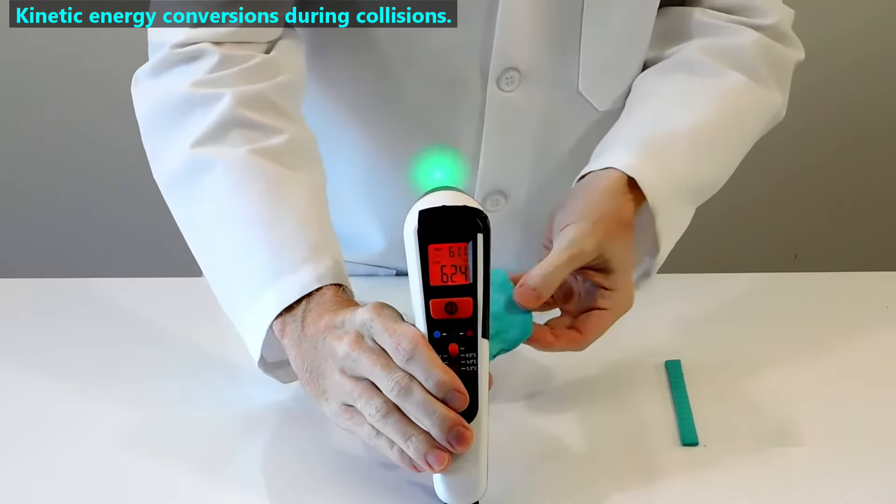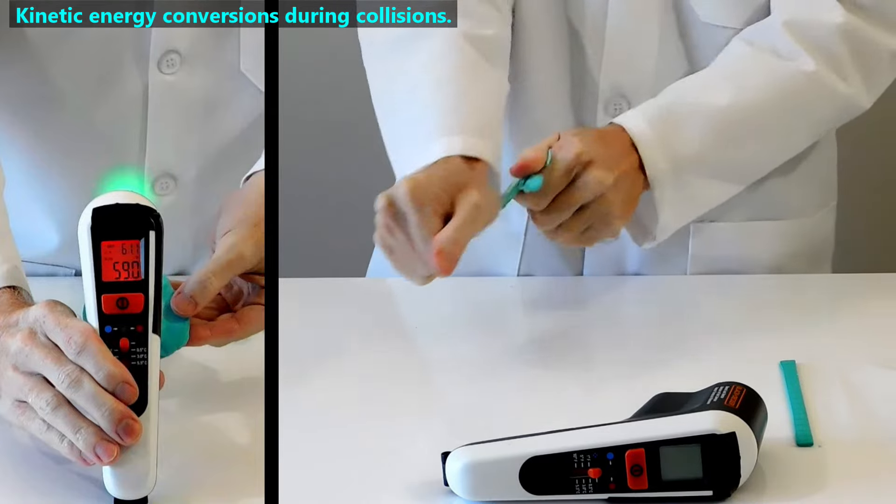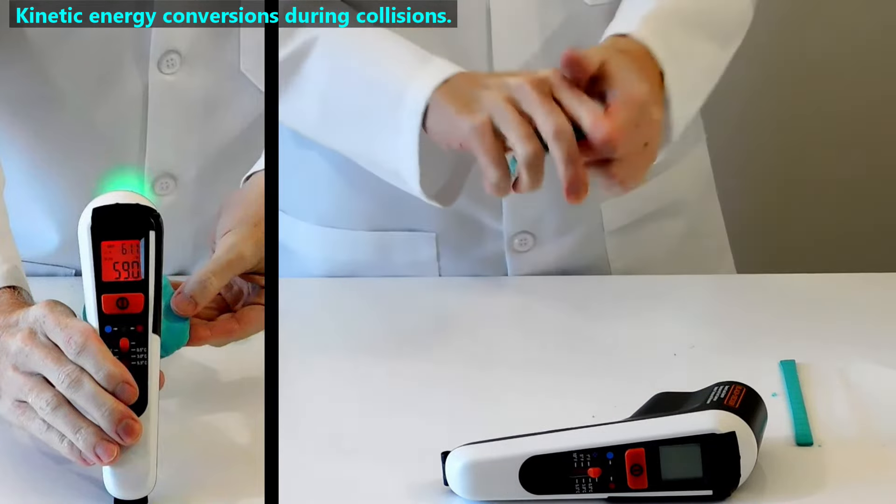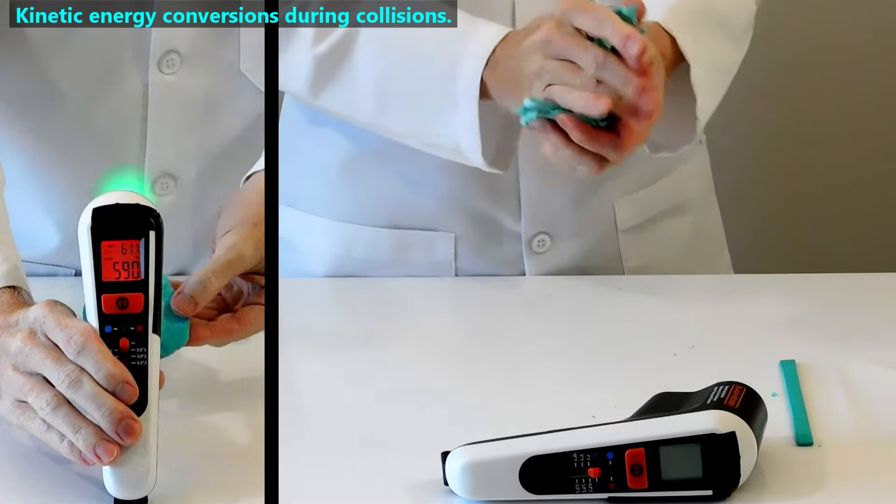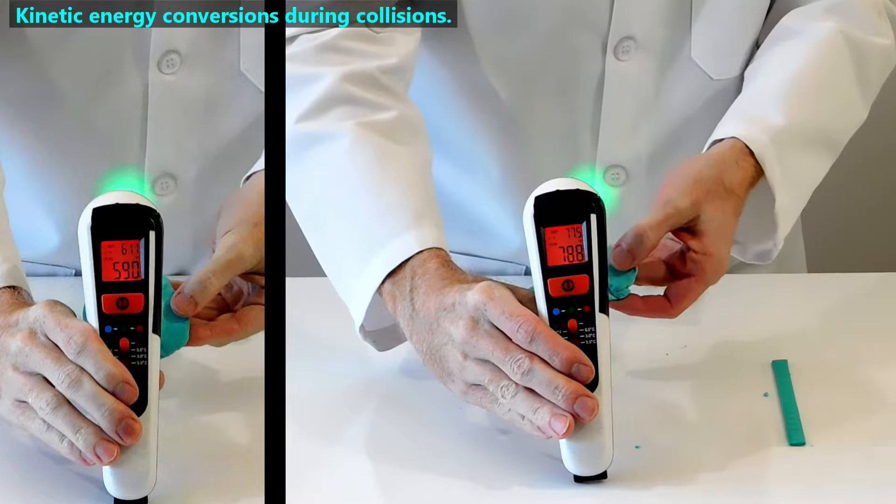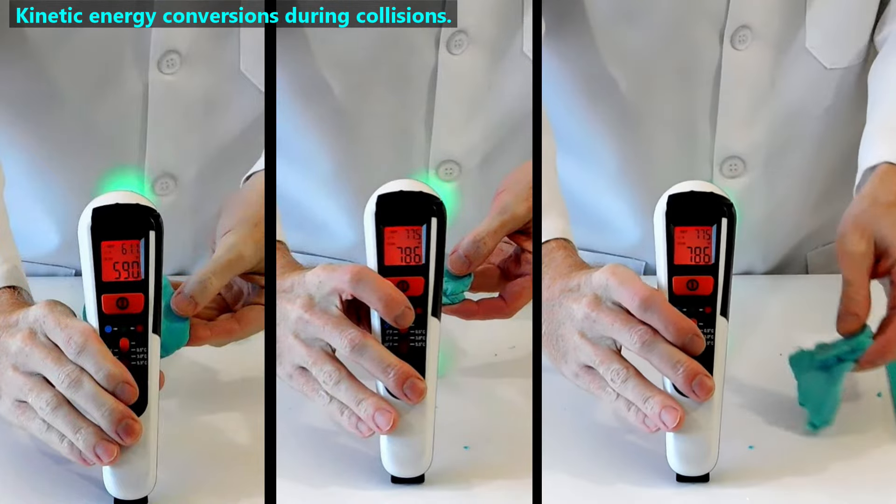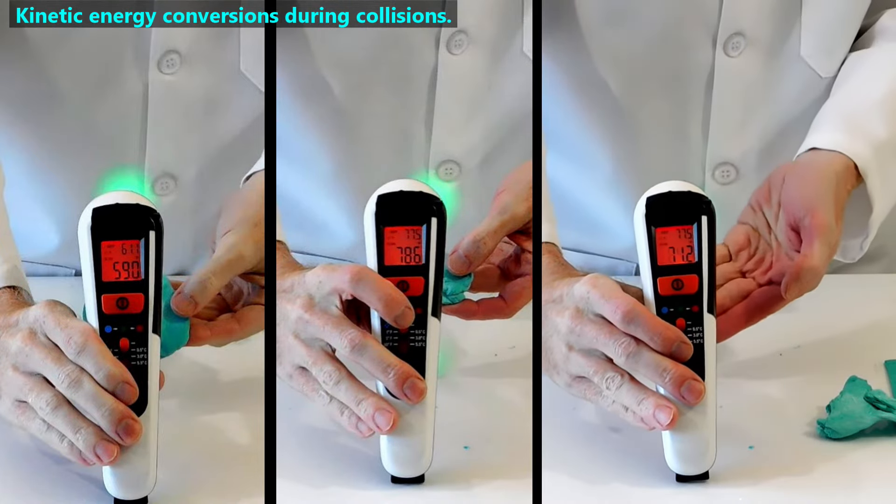Another way that collisions convert kinetic energy into heat energy is by changing the shape of one or more bodies during the collision. To illustrate how changing a body's shape can increase its temperature, we'll change the shape of this blue tack. And in just a few seconds it gets hotter than this man's fingertips.